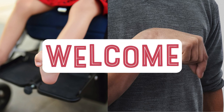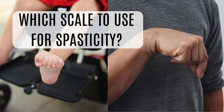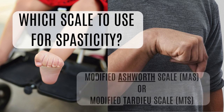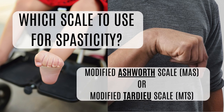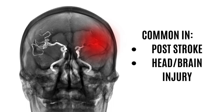Hi guys, welcome to BasicallyPhysio. Today we want to explore which scale to use to assess spasticity — is it the modified Ashworth scale or the modified Tardieu scale? As we learned from previous videos, spasticity is quite common after a stroke or after a head or brain injury.